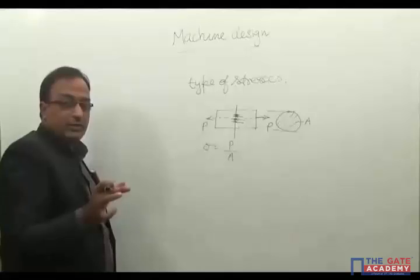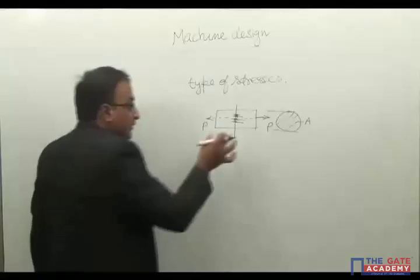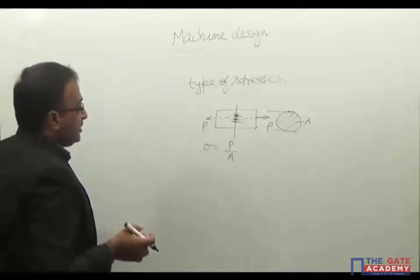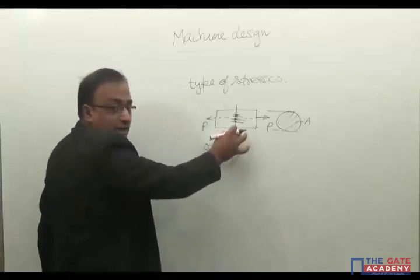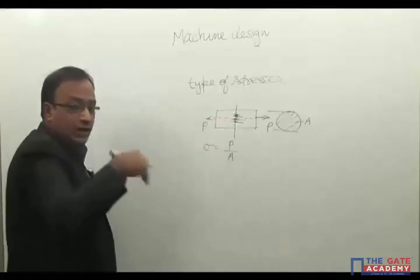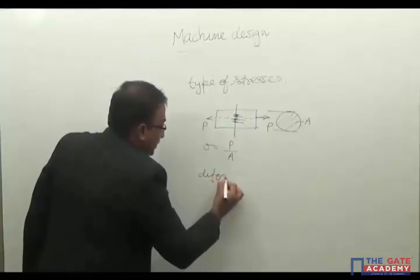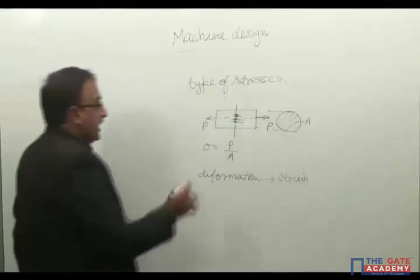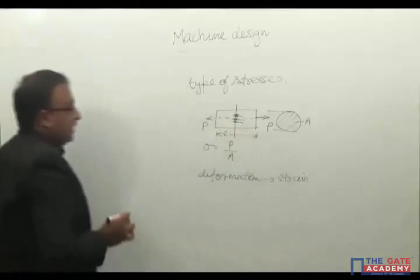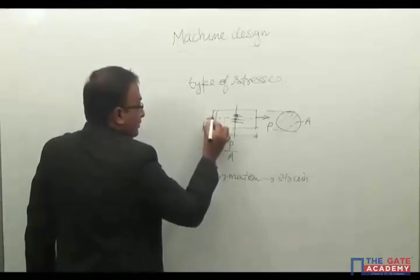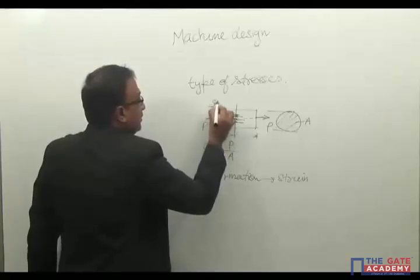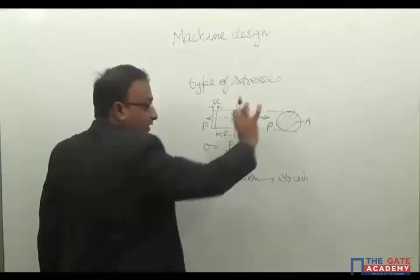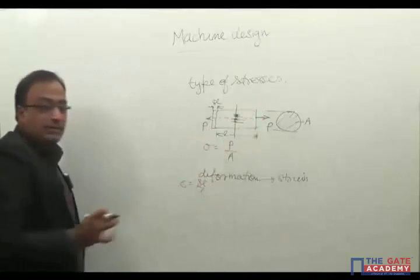The load may produce elastic deformation or plastic deformation beyond the elastic limit. Any deformation produced by the load is known as strain. If L is the length of the member and delta L is the change in length, then strain equals delta L divided by L — that is, the change in any dimension divided by the original dimension.